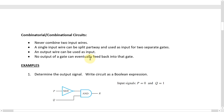Let's look at the first example: determine the output signal and write the Boolean expression for this circuit. The input signals tell us P is zero and Q is one. The NOT gate reverses the value, so P becomes a one after passing through that gate. Then these two signals — both ones — pass into the AND gate. The rule for AND is that it is one only if both of them are one, which is exactly the case. So the output is one.